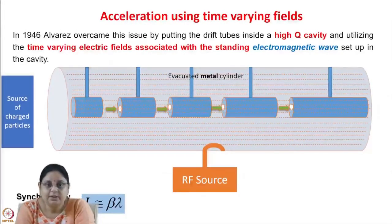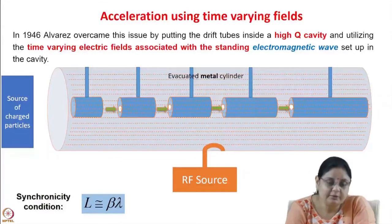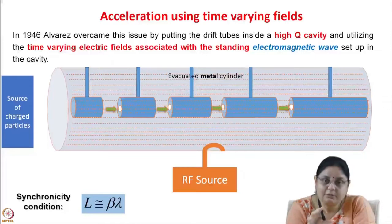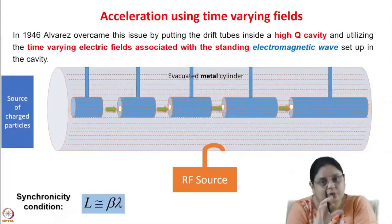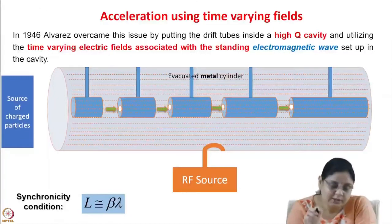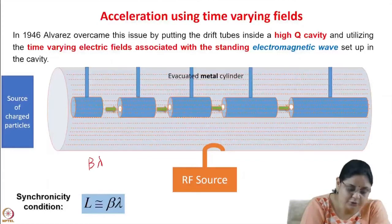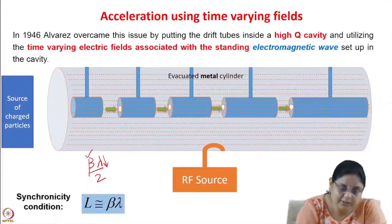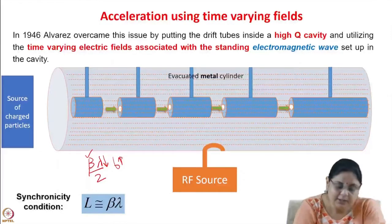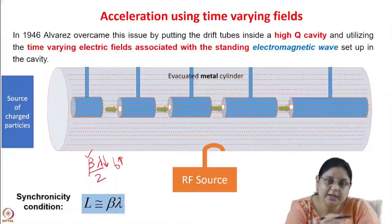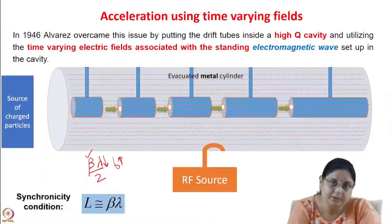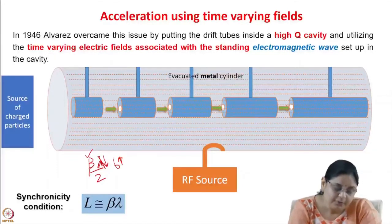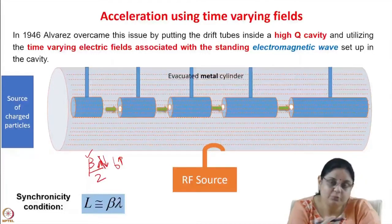We also saw that the first accelerator designed by Ising and Widroe had issues when accelerating to higher energies. There an evacuated glass cylinder was used and inside that there were drift tubes to which voltage was applied directly. Since voltage was applied directly to the drift tubes, the cell length was equal to βλ/2. As β increased, in order to keep the cell length reasonable, λ had to be decreased — in other words the frequency had to be increased. At higher frequencies the system started radiating like an antenna.